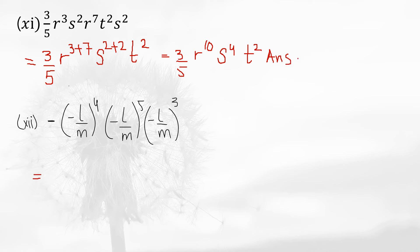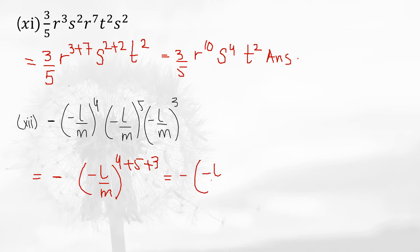The last question: write the sign as it is. For the rest, the bases are the same, so apply the law of product of powers. Write (-L/M) and add the powers: 4 plus 5 plus 3 equals 12. So the answer is minus into minus (L/M) to the power 12.